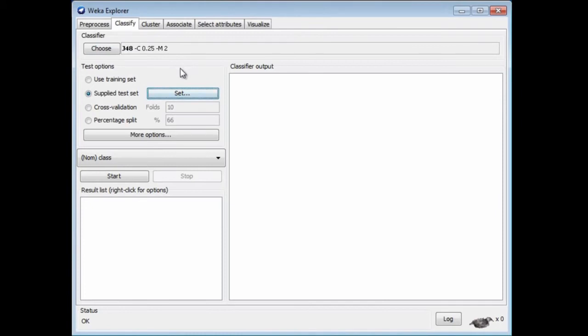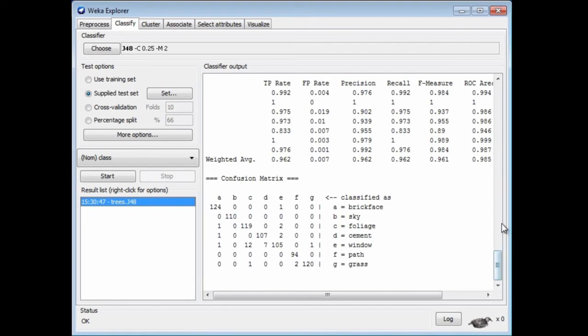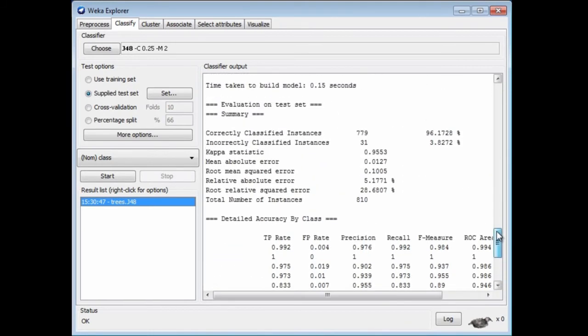Let's see how it does. In the last lesson on the same data with the user classifier, I think I got 79% accuracy. J48 does much better. Here it gets 96% accuracy on the same test set.